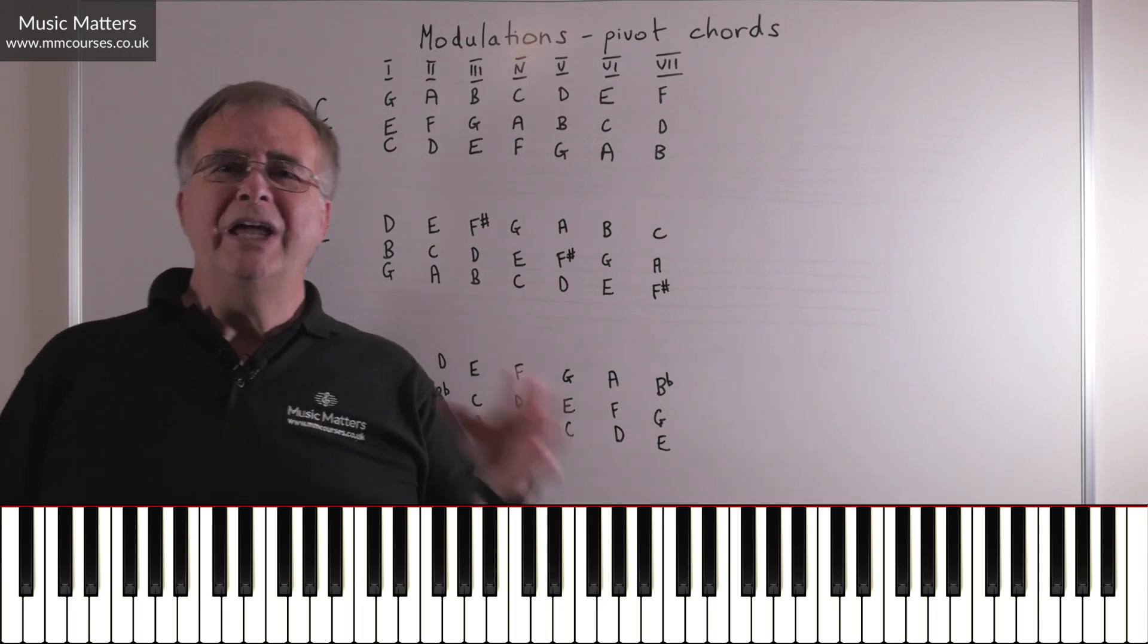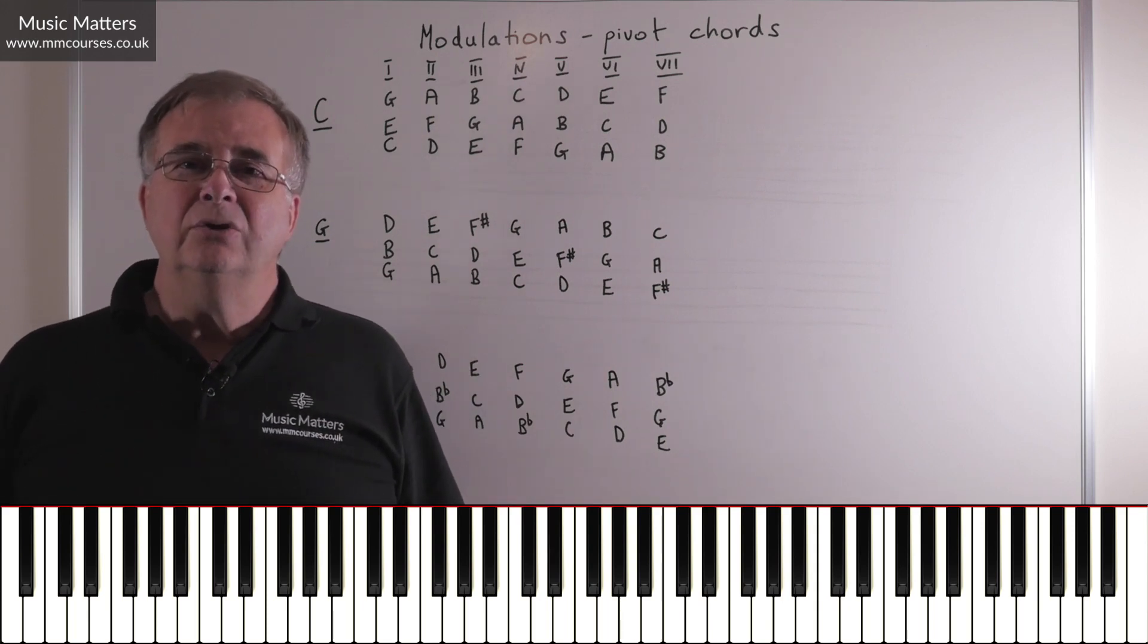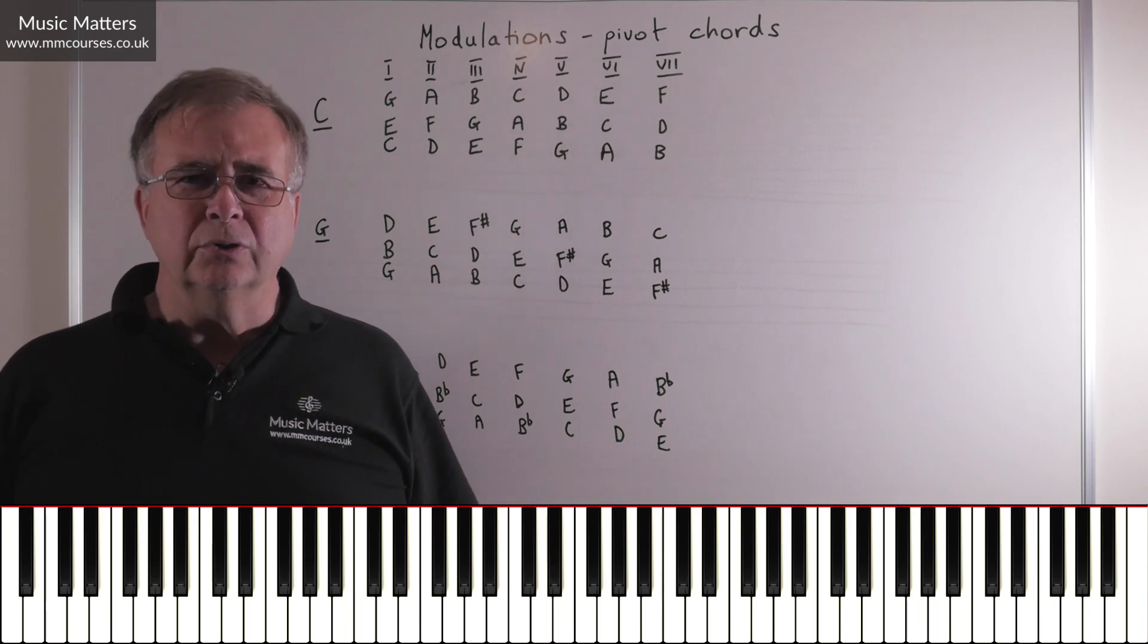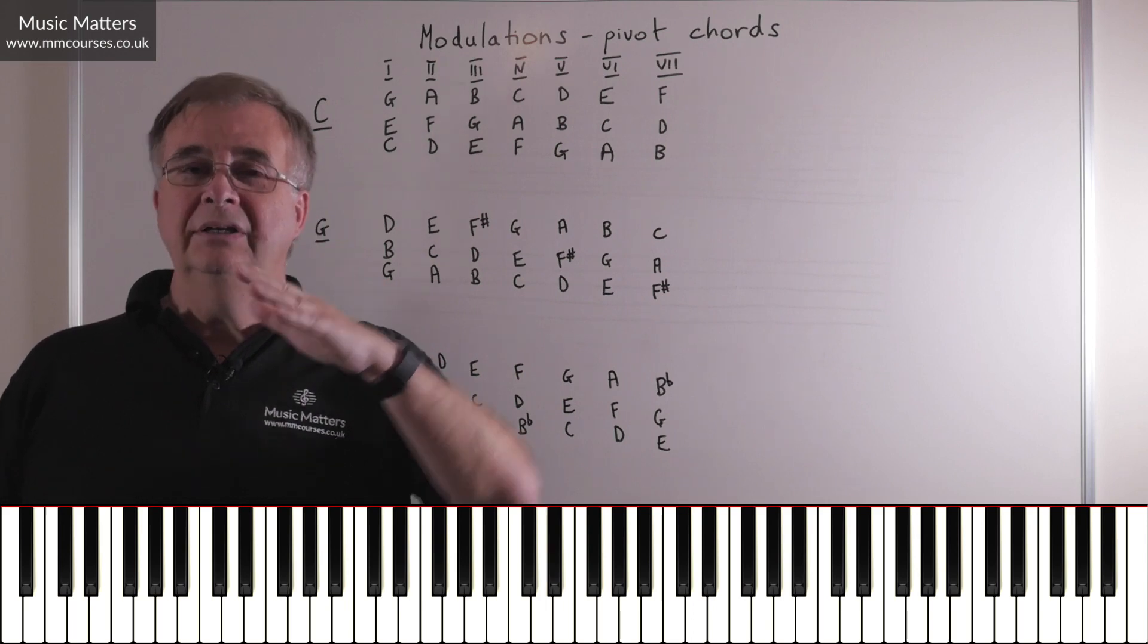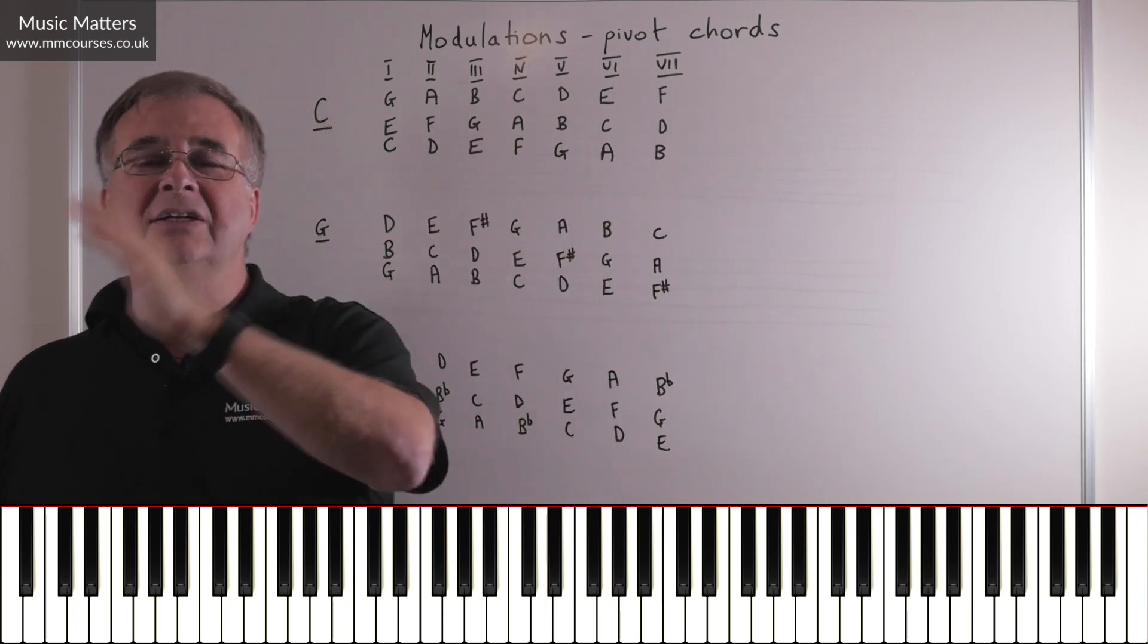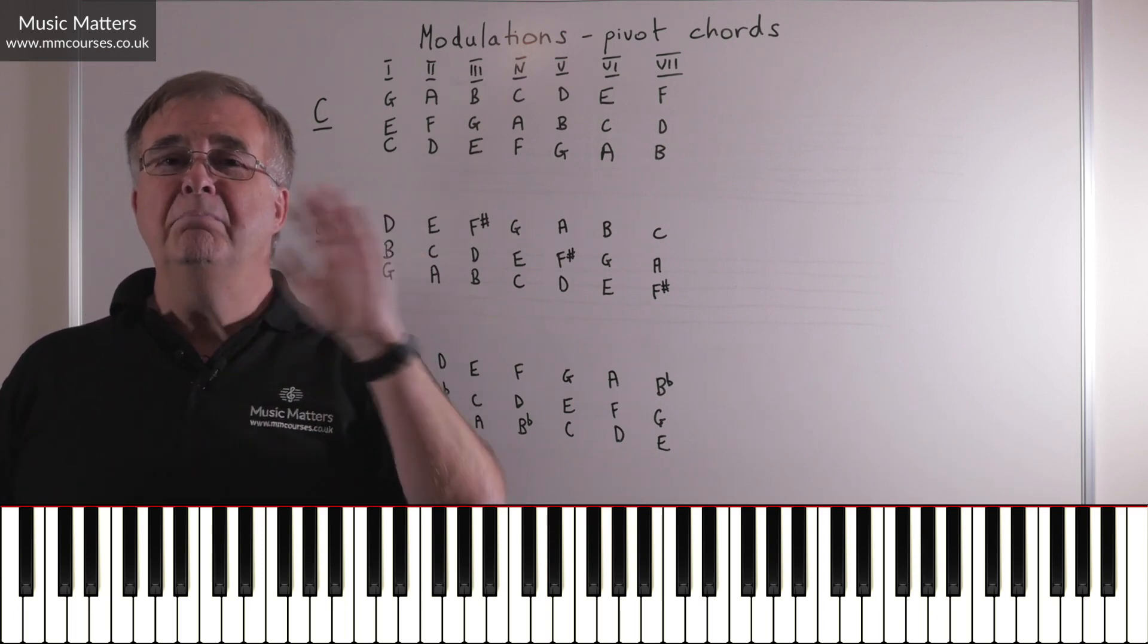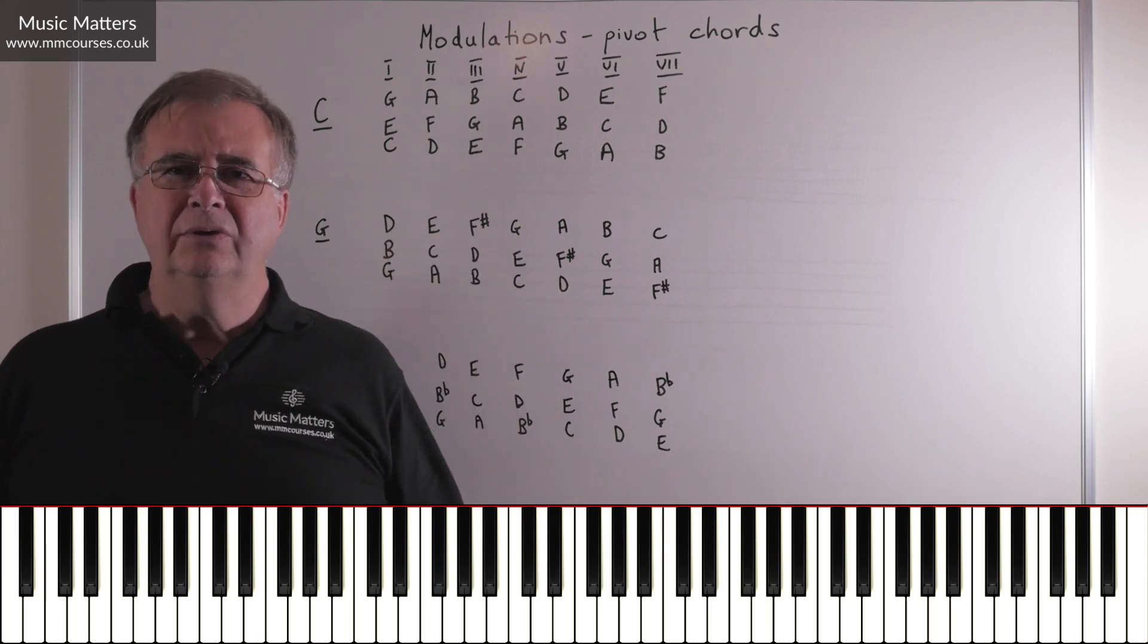Because the way we move from one key to another, essentially, is to use something called a pivot chord. So what's a pivot chord? Well, a pivot chord is a chord that is common to the key that you're leaving, as well as to the key that you're joining. So if you use a pivot chord, the modulation from one key to another goes nice and smoothly.